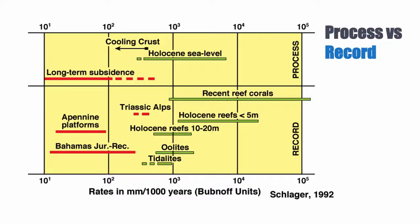However, if you look at longer-term thickness of ancient platforms — like the Apennine platform, the Triassic Alps, or the Bahamas from the Jurassic to the recent — the rates are much lower. That's because on the long term, what controls sediment accumulation is ultimately tectonics: it's subsidence. Long-term subsidence rate is what controls, at the geological time scale, the thickness of sediments that can accumulate.